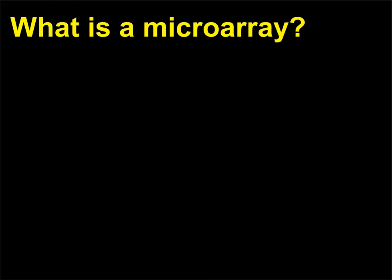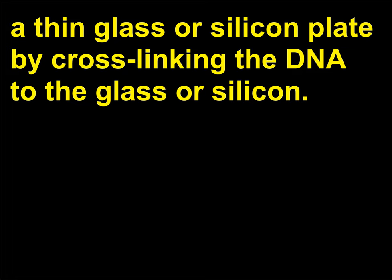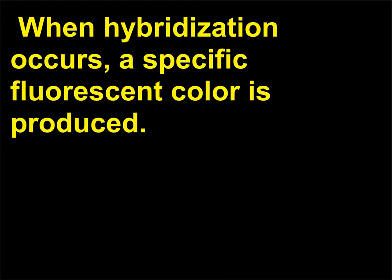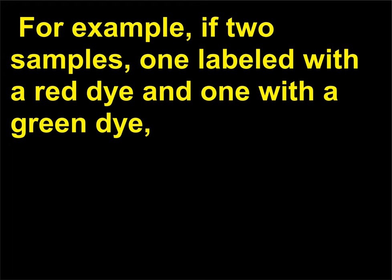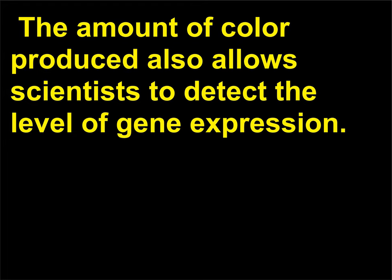What is a microarray? A microarray is a technique in which PCR-amplified DNA fragments are placed on a thin glass or silicon plate by cross-linking the DNA to the glass or silicon. Fluorescent dye-labeled mRNA or complementary DNA is then hybridized to the sample. When hybridization occurs, a specific fluorescent color is produced. For example, if two samples — one labeled with a red dye and one with a green dye — are both hybridized to the same DNA sequence on the microarray, a yellow color is produced. The amount of color produced also allows scientists to detect the level of gene expression.